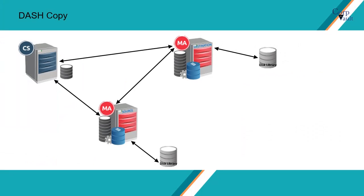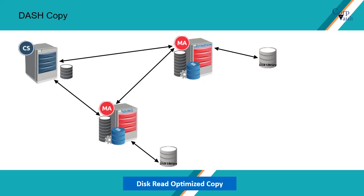Let's discuss in detail how Dash Copy transfers only unique data segments to target. With the Disk Read Optimized Copy option, it reduces the I/O load on the primary source disk by transmitting only the signatures to the target media agent. During the Dash Copy operation, the existing signatures are read from the data chunk's metadata that contains the data block signatures available on the primary disk on the source media agent.